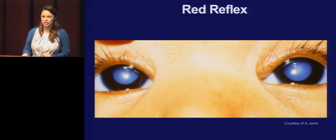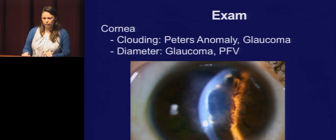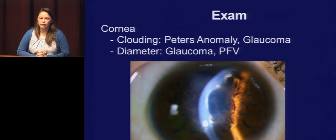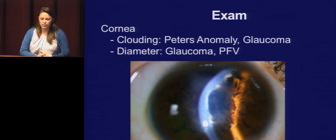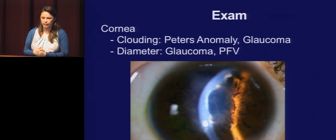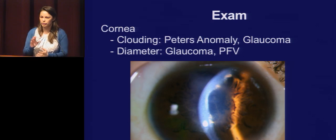The red reflex — I love the red reflex. It can show you a lot, dilated and undilated. Things you can see on the cornea include clouding, which can indicate glaucoma, Peter's anomaly, or anterior segment dysgenesis. Corneal diameter is important — if it's small, think PFV; if it's large, think glaucoma. I usually like to say there's no straightforward pediatric cataract. If it were straightforward, they wouldn't have it.